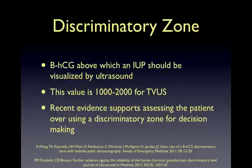Because ectopic pregnancies do not produce HCG in the same way that IUPs do, large ectopic pregnancies and ruptured ectopic pregnancies have been associated with beta-HCGs as low as 200. Recent evidence has also shown that some women with HCGs above the discriminatory zone and no definitive IUP can still progress to have a normal pregnancy.